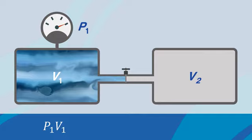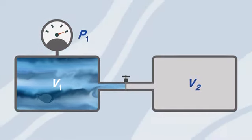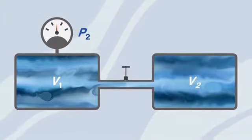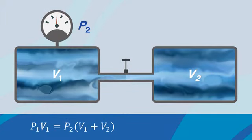Second, if we open the valve to chamber 2, then Boyle's law becomes p1v1 equals p2 times v1 plus v2.